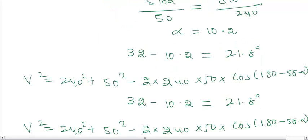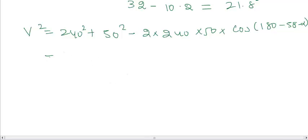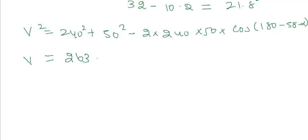On substituting the values, you can get V is 263. That is the true velocity of the plane, 263 kilometers per hour.